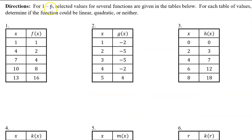For numbers 1 through 6, selected values for several functions are given in the tables below. For each table of values, determine if the function could be linear, quadratic, or neither.